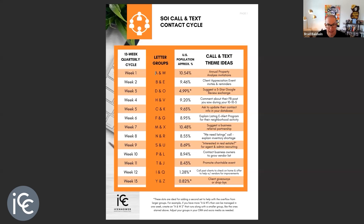So everybody with an A last name, a W last name, a B last name, an E last name, a D last name, an O last name — that's how you want to set up your CRM. I would set my CRM up with 13 categories: SOI A and W, SOI B and E, SOI D and O, SOI H and B, and so on — either as top-level categories or subcategories. Then I have two-week assault plan tags, and A lead, B lead, C lead, D lead tags. Depending on your CRM, these may be called tags or categories.